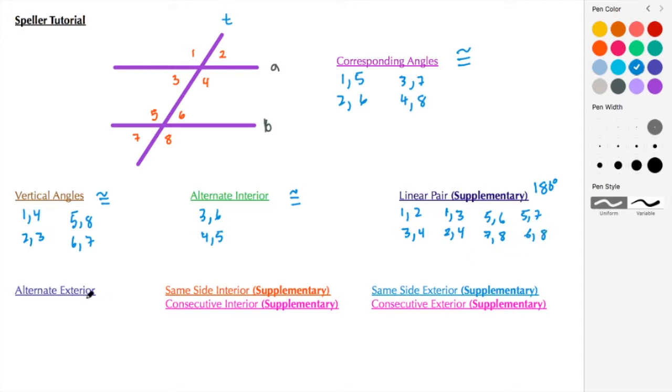Next we have alternate exterior angles. Those would be angles 1 and 8, and angles 2 and 7. Alternate exterior angles are also congruent.